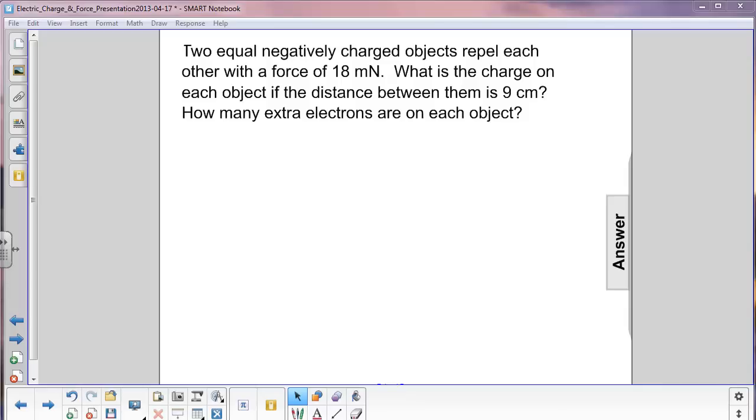Two equal negatively charged objects repel each other with a force of 18 millinewtons. What is the charge on each object if the distance between them is 9 centimeters? How many extra electrons are in each object?